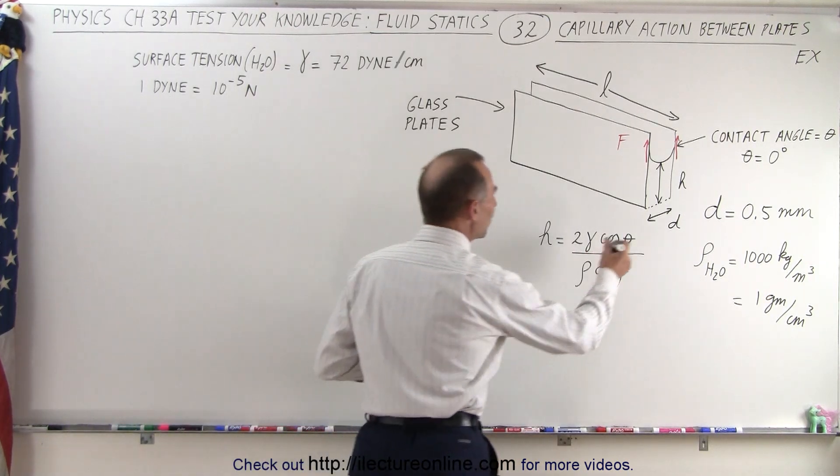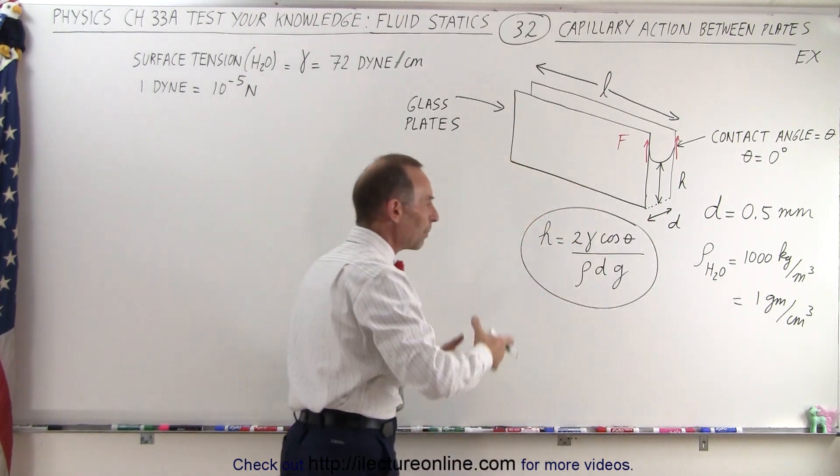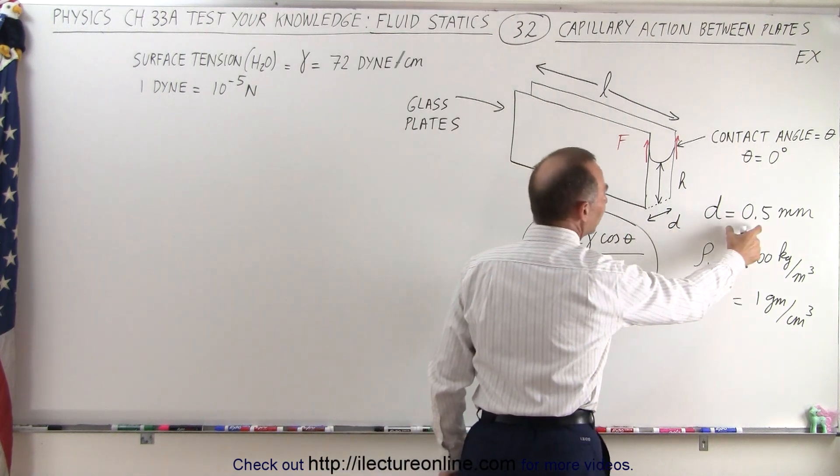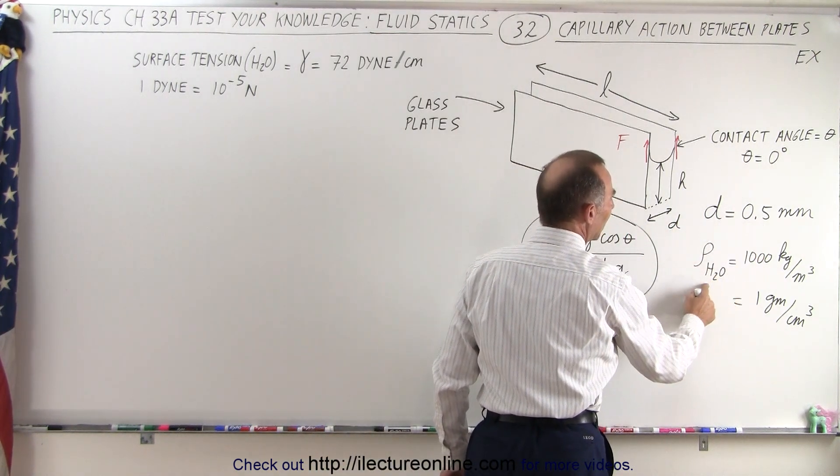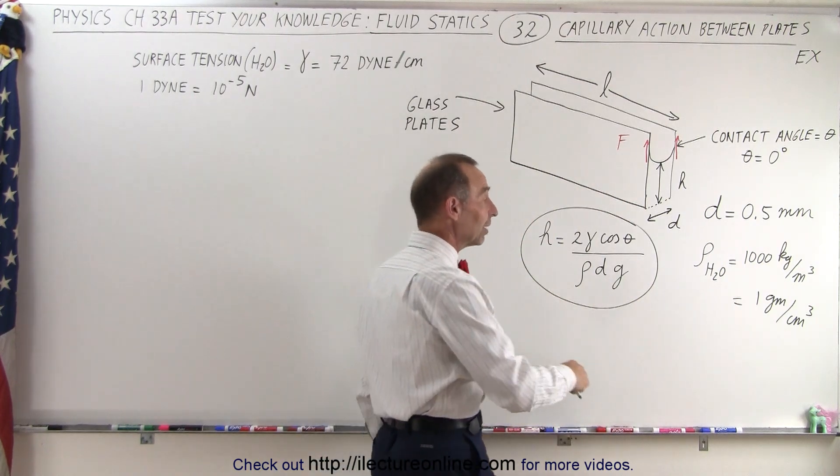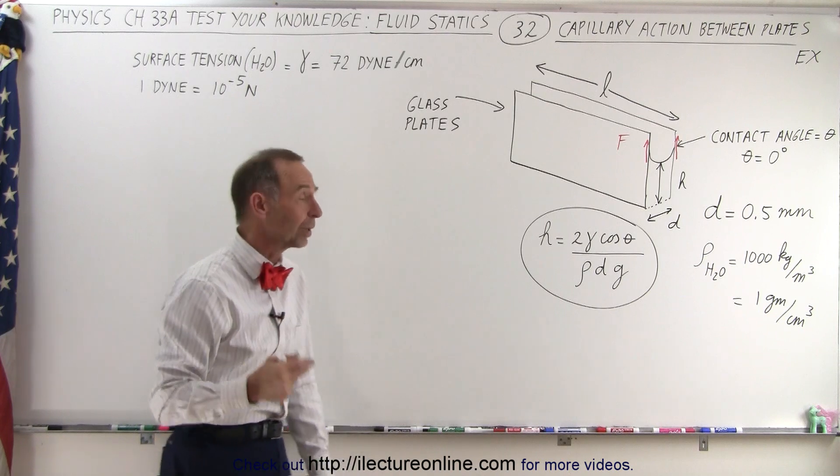Well here was the equation that we found in the previous video for the height between two plates for capillary action. We have the distance between the plates is half a millimeter and the density of water a thousand kilograms per cubic meter, but we have to convert that to grams per cubic centimeter. So let's plug in the numbers here and see what that looks like.